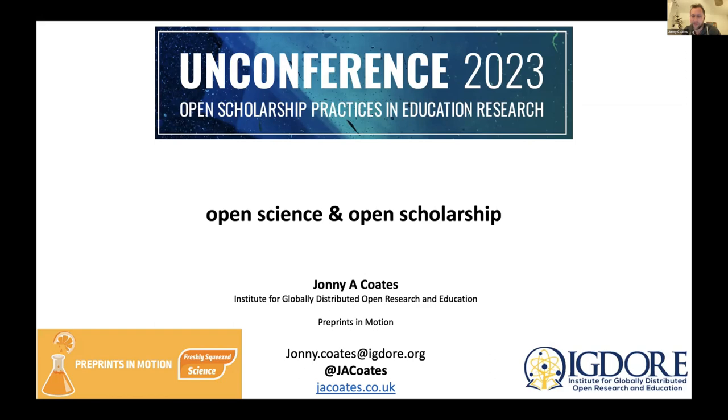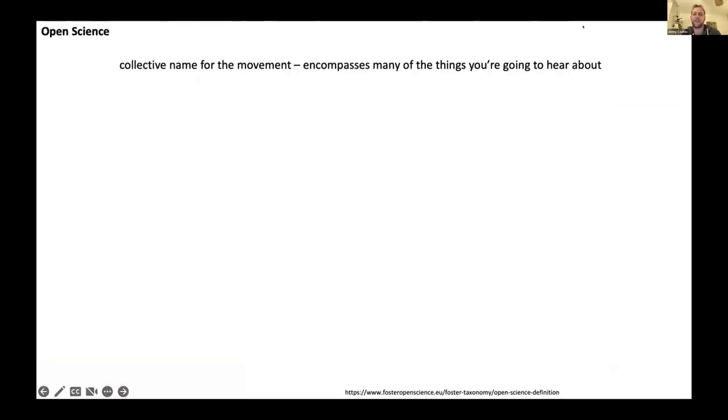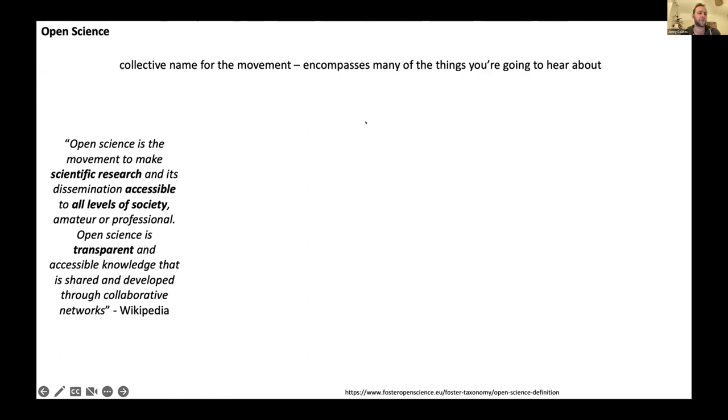So what is open science? Well, open science is basically just the collective name for an entire movement, which is why it's the easy one to talk about. And it really encompasses many of the things you're about to hear about in the rest of this session. Wikipedia had quite a nice little definition, so I stole that. So open science is really the movement to make scientific research accessible to everyone.